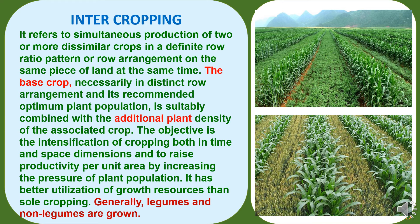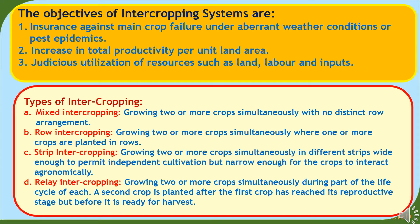Now we will discuss about intercropping. It refers to simultaneous production of two or more dissimilar crops in a definite row ratio pattern or row arrangement on the same piece of land at the same time. The base crop, necessarily in distinct row arrangement and its recommended optimum plant population, is suitably combined with the additional plant density of the associated crop. The objective is the intensification of cropping both in time and space dimensions and to raise productivity per unit area by increasing the pressure of plant population. It has better utilization of growth resources than sole cropping. Generally legumes or non-legumes are grown in intercropping. The objectives of intercropping systems: first, insurance against main crop failure under aberrant weather conditions or pest epidemics; second, increase in total productivity per unit land area; and third, judicious utilization of resources such as land, labor and inputs.